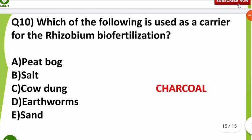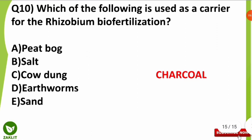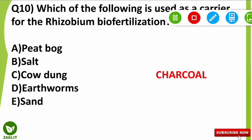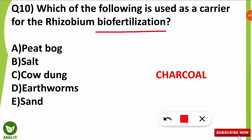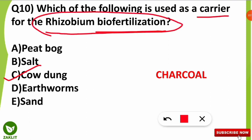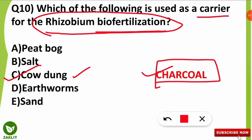The tenth and final question was: which of the following is used as a carrier for Rhizobium bio-fertilization? All participants gave the wrong answer. The correct answer is cow dung — cow dung is used as an efficient carrier for Rhizobium bio-fertilization. Charcoal is also used but it is costly, so the cost-effective carrier is cow dung, which is used as the carrier for Rhizobium bio-fertilization.